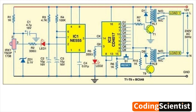Capacitors C1–C5 are used for filtering and smoothing the DC voltage, as well as for decoupling and stabilizing the circuit. Resistors R1–R7 are used to limit current flow and set bias voltages for various components. Diodes D5 are used for protection and signal conditioning.